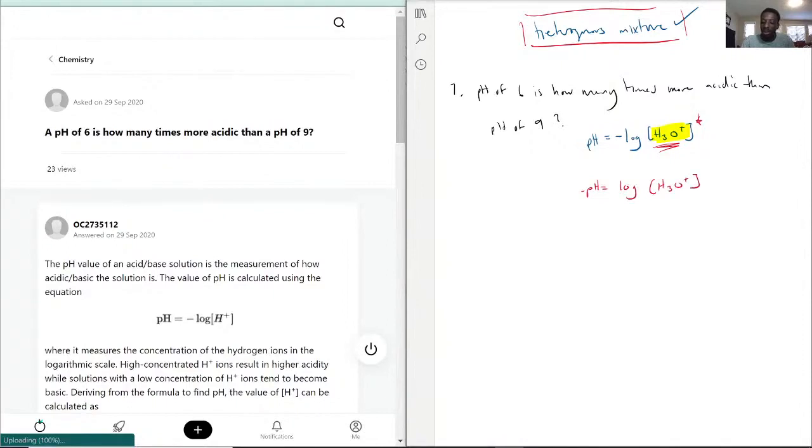And then we know that this is going to be the base 10, so in order to get rid of that, you have to put everything to the power of 10. Make sure you put it in the right spot, so it would be 10 to the power of all this, and then this would cancel out.